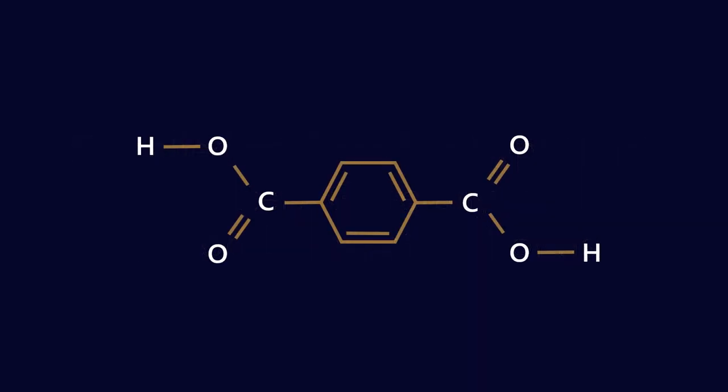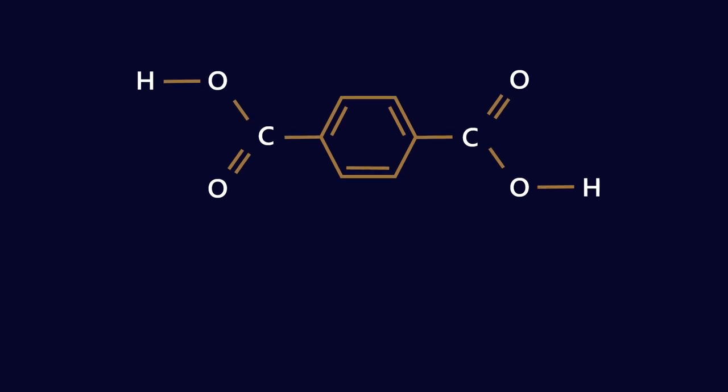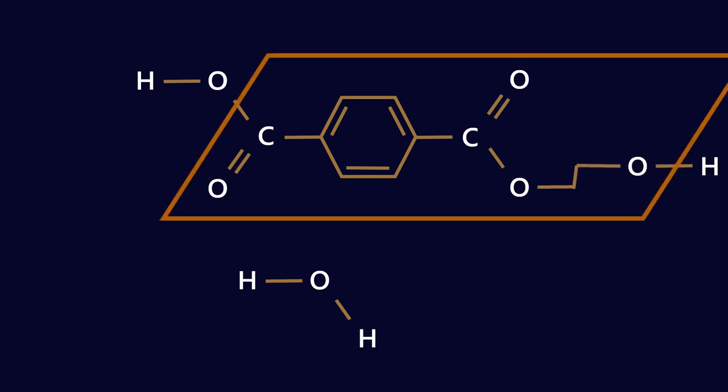So let's start with some kind of ester. So here we have an aromatic ester with two ester functional groups. And if we had a molecule come along with a couple of hydroxy groups, then what it's going to do is initiate a reaction where we lose a water molecule, and what I've highlighted in the orange here is what is going to be what we call the repeating moiety.